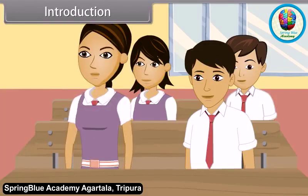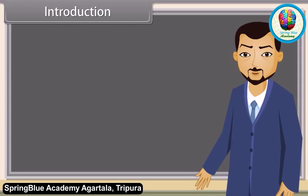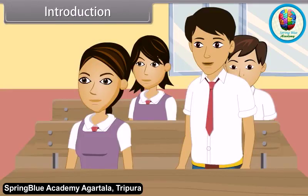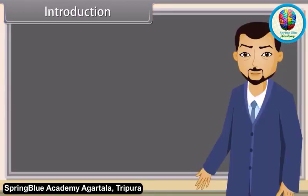Teacher, what are carboxylic acids? Carboxylic acids are the organic compounds which contain carboxyl group. Now, who will tell me what is carboxyl group? Carboxyl group consists of carbonyl group and hydroxyl group. Very good, Ramesh. In this lesson, we will learn more about carboxylic acids.